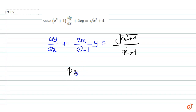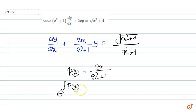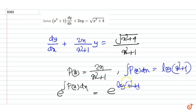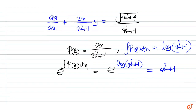Let P(x) = 2x/(x² + 1). Then the integrating factor is e to the power of the integral of P(x) dx, which equals e^[log(x² + 1)], therefore the integrating factor is x² + 1.